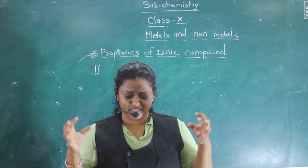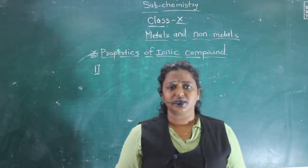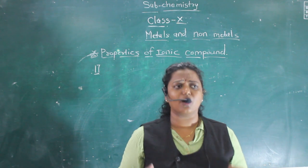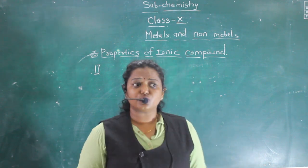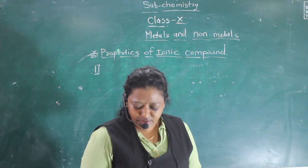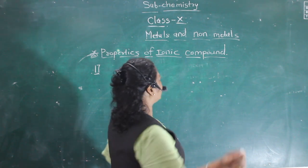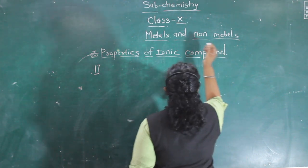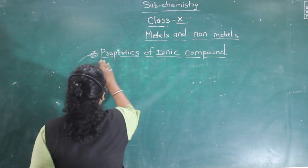I have shown you with examples how sodium chloride is formed, how magnesium chloride is formed, and how magnesium oxide is formed. An ionic compound is also called an electrovalent compound - that is one important term: electrovalent compound.